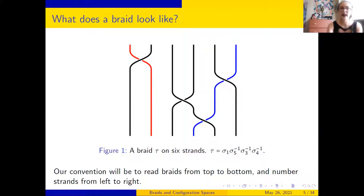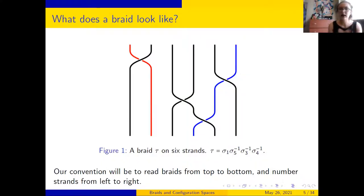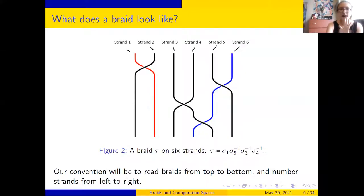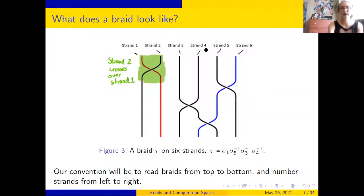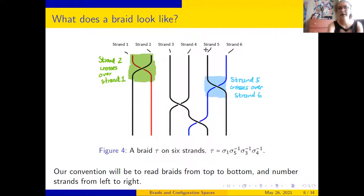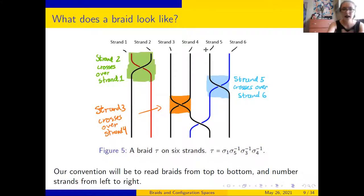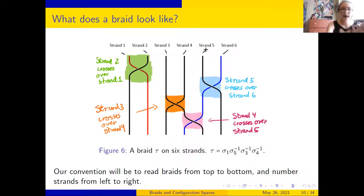This is a group and its objects are braids. A braid is going to be a collection of strands that cross over each other. The important thing about these braids is the combinatorial information telling us what strand crosses over what and when. Here I've got a braid on six strands. I'm going to read my braids from top to bottom, and I'm going to number the strands from left to right. For example, this red strand starts as the first strand and ends as the second, and this blue strand starts as the sixth strand and ends as the fourth.